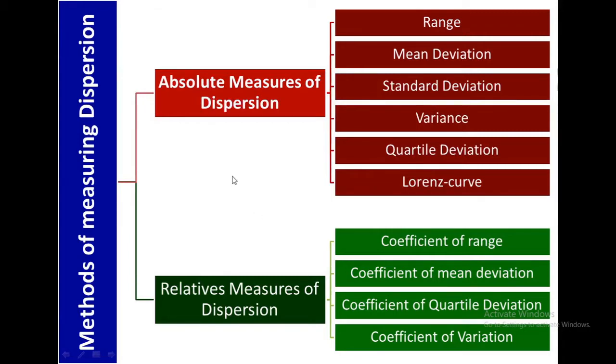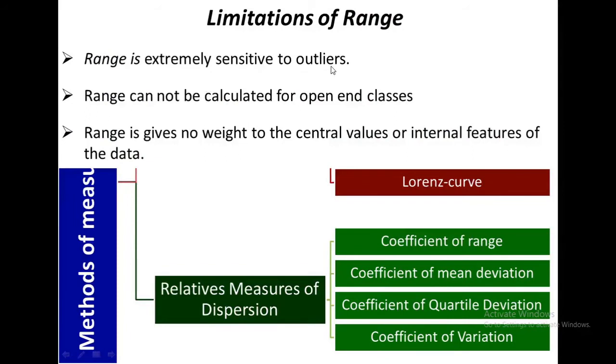Which can be divided into two groups: absolute measures of dispersion and relative measures of dispersion. Among various kinds, we have already discussed range, coefficient of range, mean deviation, and coefficient of mean deviation. But there are certain limitations with these measures. For example, range is extremely sensitive to outliers, cannot be calculated for open end classes, and gives no weight to center values or internal features of a data set.